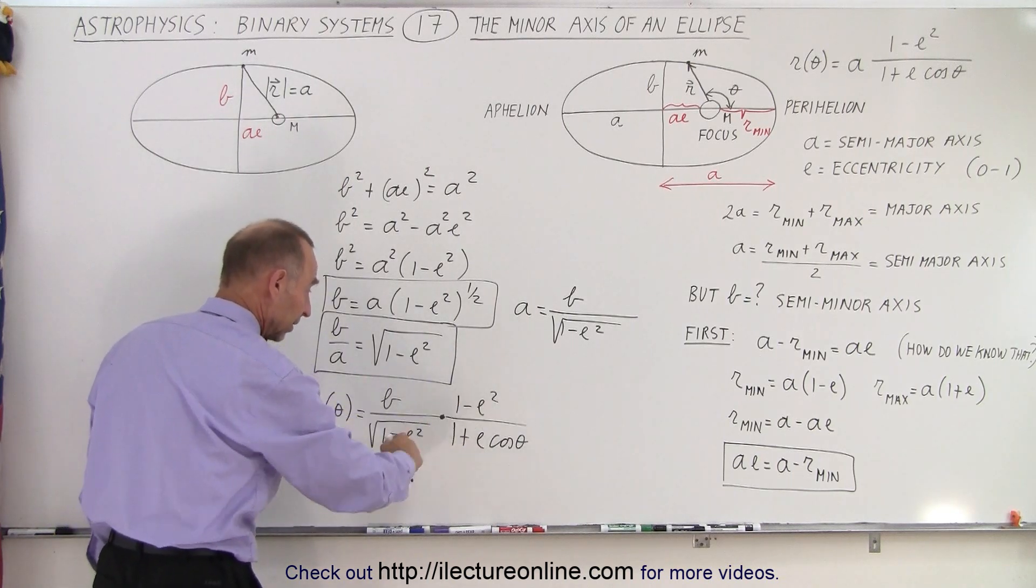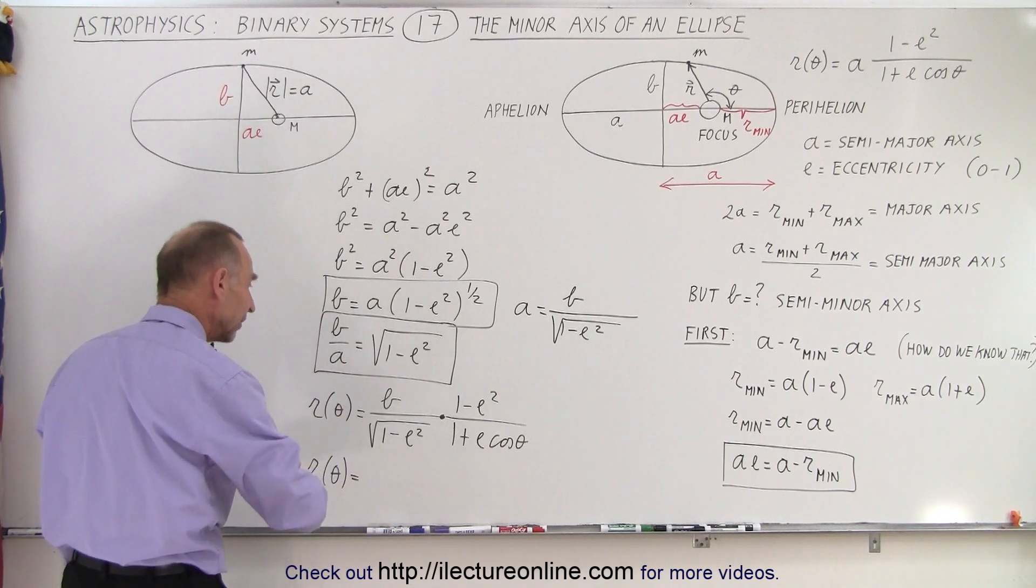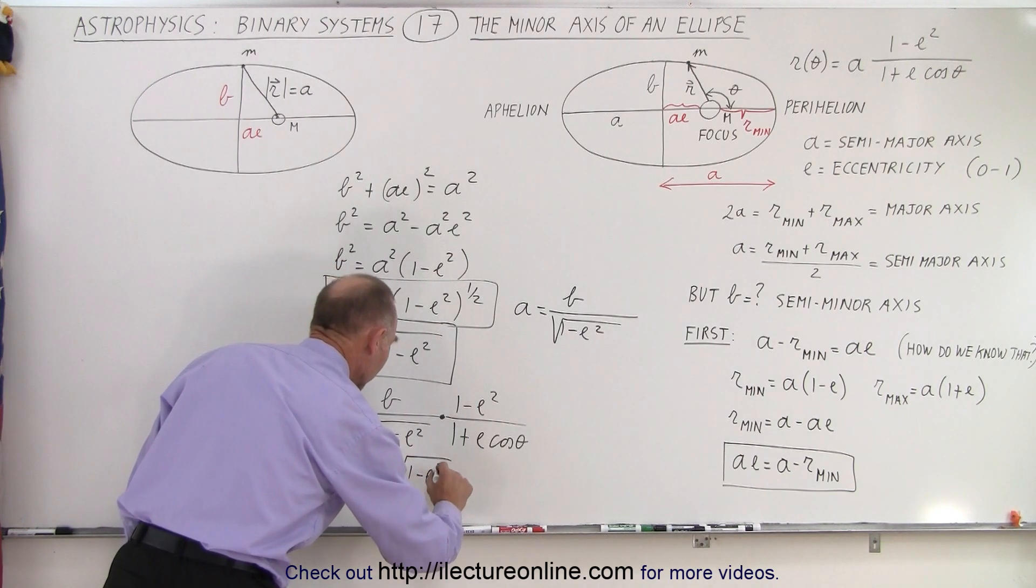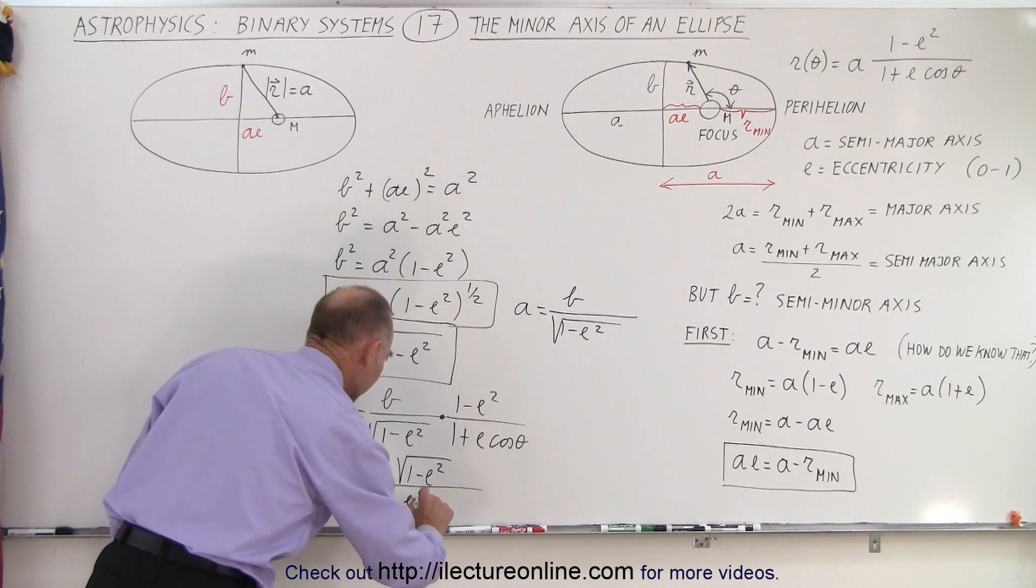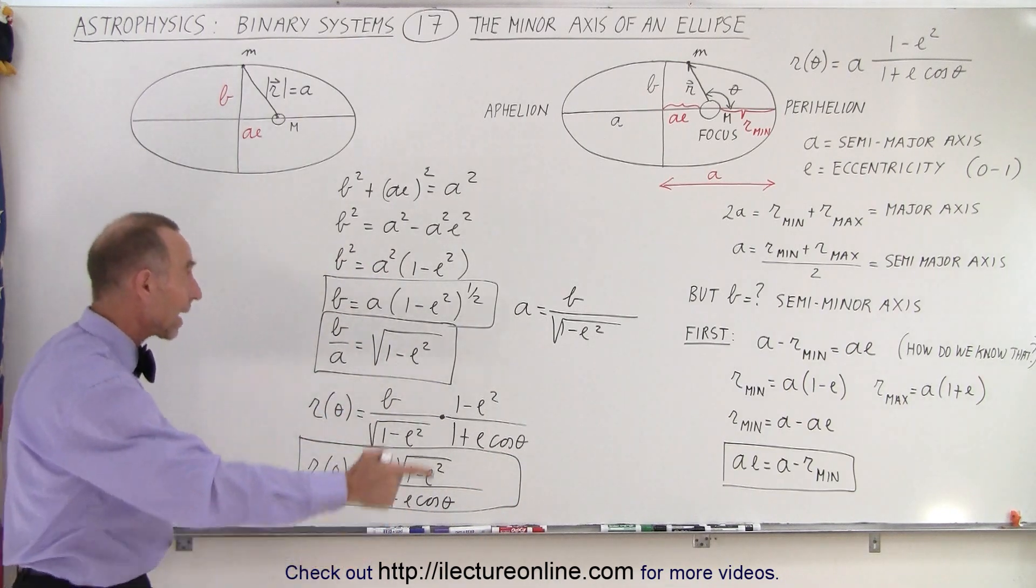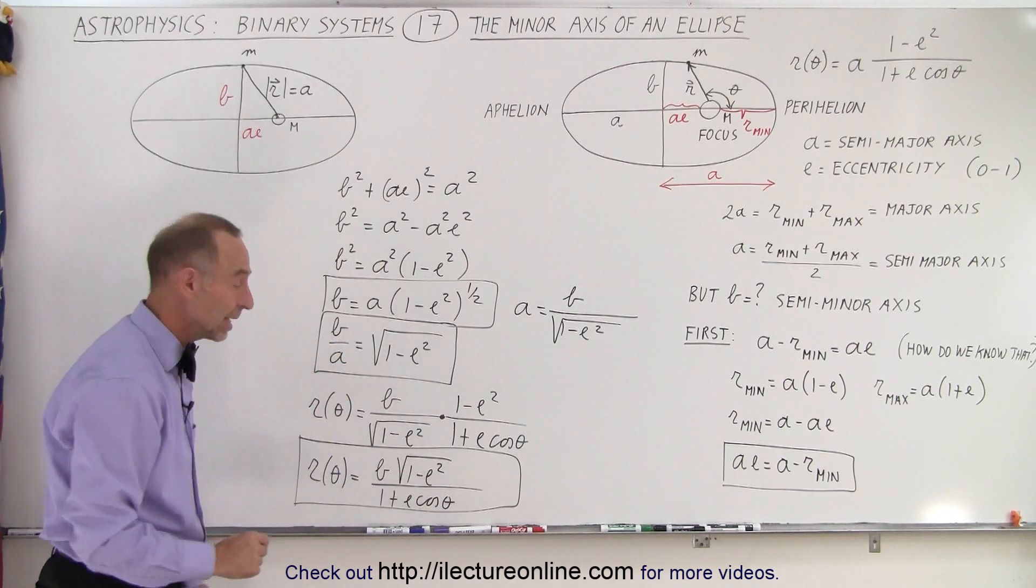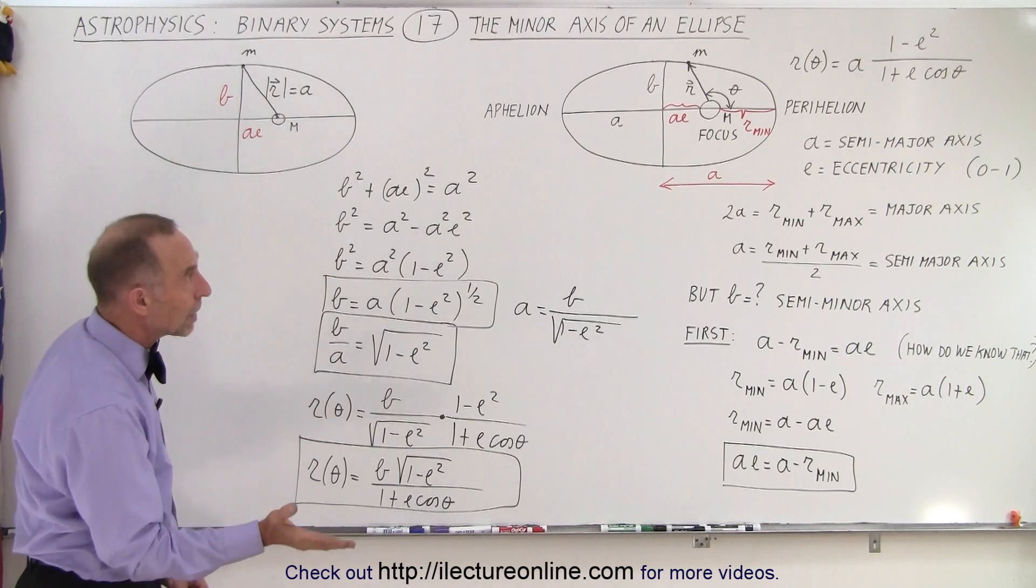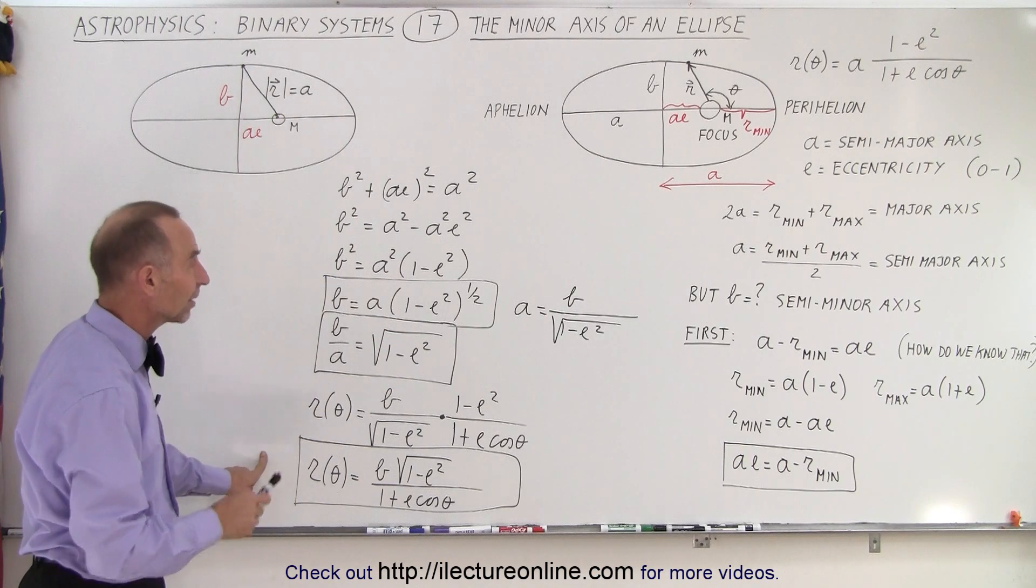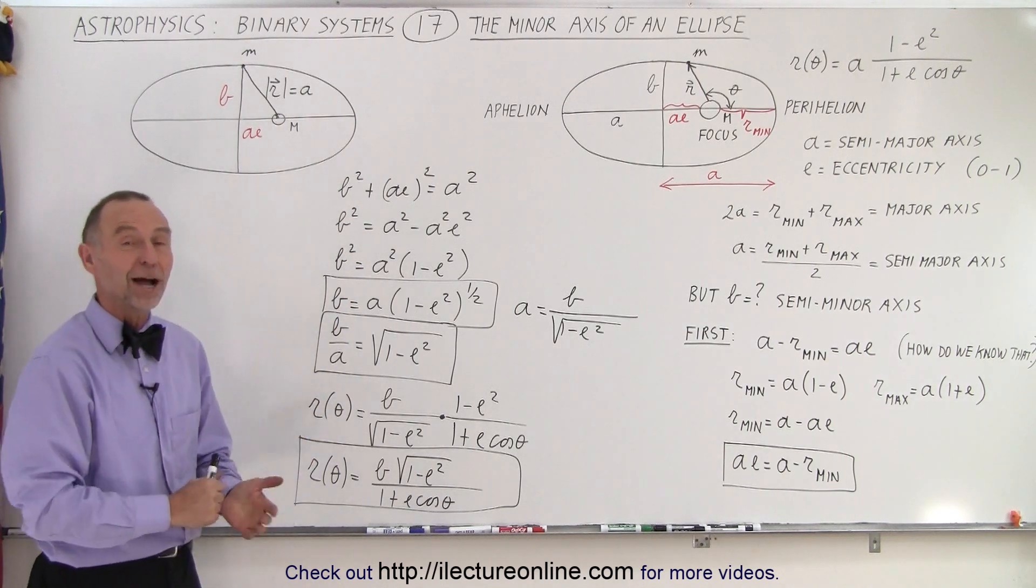And then realize that there's a lot of similarity here, so we can finally rewrite that r as a function of θ in terms of the semi-minor axis can be written as B√(1 - e²)/(1 + e cos θ). So here we have the same equation for r, the distance from the sun to the planet as the planet goes around an elliptical orbit, in terms of the semi-minor axis, the ellipticity, and the position relative to the angle—the angle that's relative, of course, to the semi-major axis. And that is how we define the semi-minor axis in this equation, just like we did the semi-major axis in the same equation. And that is how it's done.